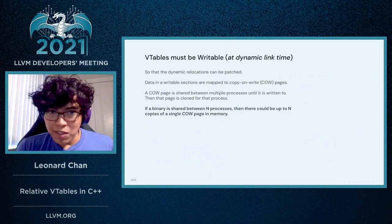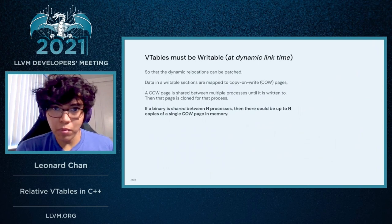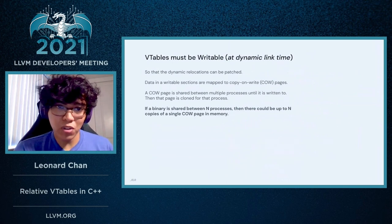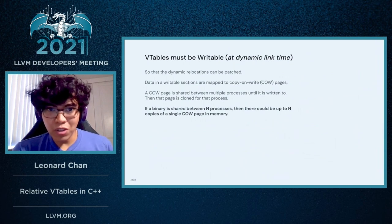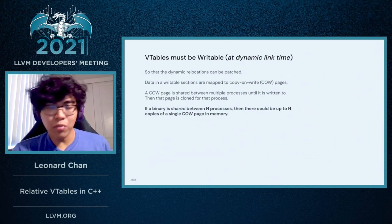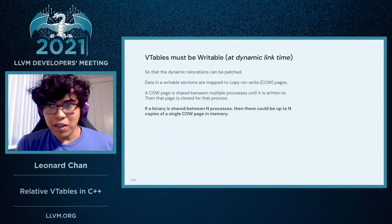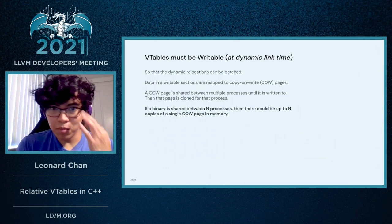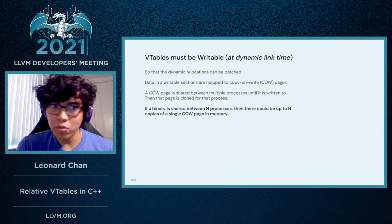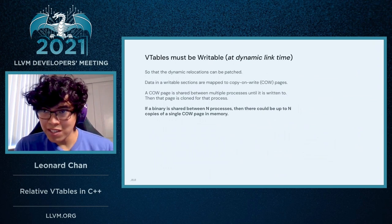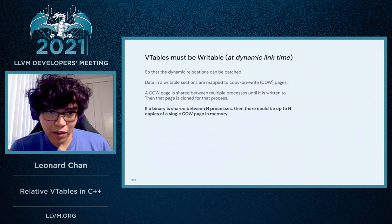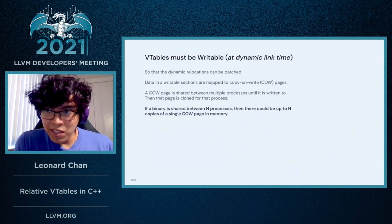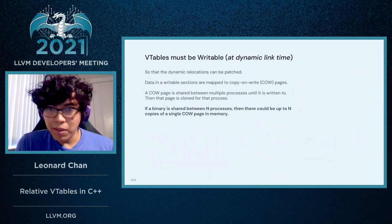Now, what does this mean for VTables? It means that VTables are technically writable up to at least dynamic link time, so that these dynamic relocations can be patched. And data that's mapped into a writable section is actually mapped to something called copy-on-write pages. A copy-on-write page is essentially a page that's shared between multiple processes, but only up until it's written to — at that point, the page is cloned for that process. So what this means is if a binary is shared between N processes and has a copy-on-write page, then there could be up to N different copies of that page in memory.